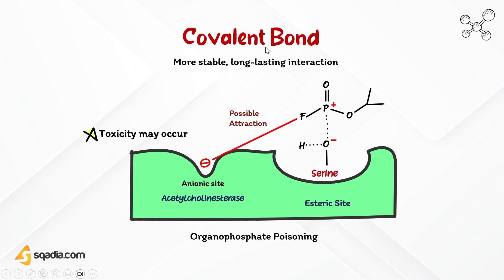First, we will discuss covalent bond formation. Covalent bond formation occurs when the drug molecule possesses a reactive functional group such as an electrophile, which is an electron-deficient moiety, that can interact with a nucleophile, which is an electron-rich group on the receptor. The interaction between the drug and the receptor involves the transfer of electron pairs, resulting in the formation of the covalent bond.